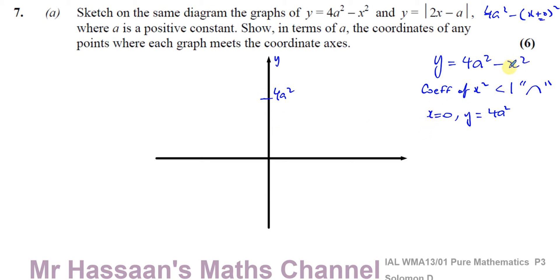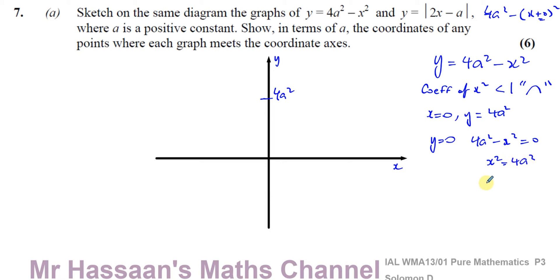You can think of it as minus x squared being raised up by 4a squared, so the vertex moves up from the origin by 4a squared. The graph is upside down. We also need to find where it crosses the x-axis, when y equals 0. Solving 4a squared minus x squared equals 0 gives x squared equals 4a squared, so x equals plus or minus 2a. Assuming the domain is all real numbers, the x-intercepts are plus 2a and minus 2a.